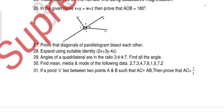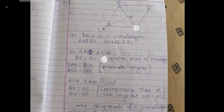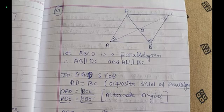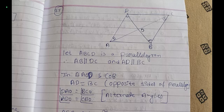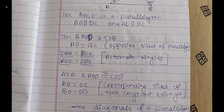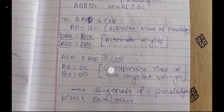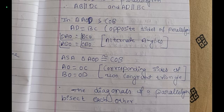Question 27: prove that the diagonals of a parallelogram bisect each other. Let ABCD be a parallelogram with AB ∥ DC and AD ∥ BC. In triangles AOD and COB: AD = BC (opposite sides of a parallelogram), angle DAO = angle BCO (alternate angles), and angle ADO = angle CBO (alternate angles). By the ASA postulate, triangle AOD ≅ triangle COB, so AO = OC and BO = OD. Therefore the diagonals of a parallelogram bisect each other.